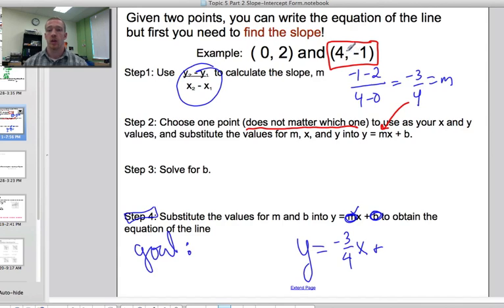So we plug in 4 for our x, or negative 1 for our y, equals the slope, negative 3 fourths, times 4, because that's our x, and then plus b. We don't know what b is. That's what we're trying to solve for. So negative 1 equals negative 3 fourths times 4 is negative 3 plus b. And we add 3 to both sides, and that gives us a 2.